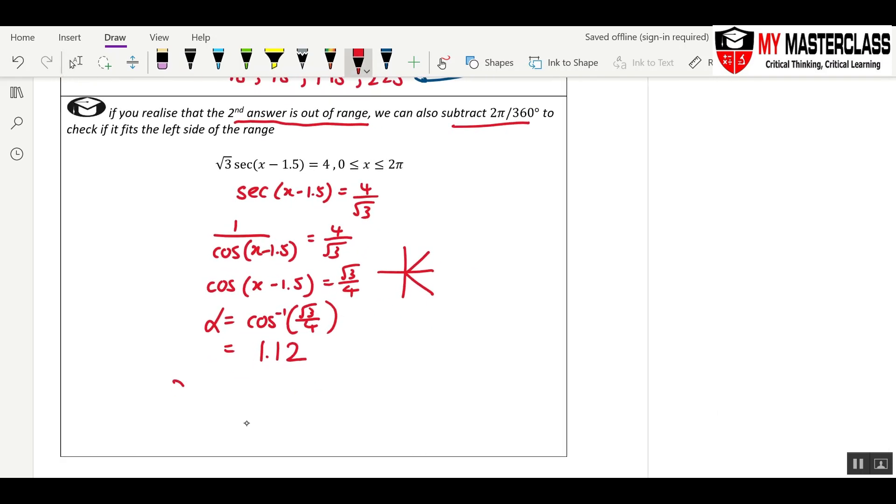Then, because the angle is x - 1.5, remember to write x - 1.5 equals first quadrant 1.12, fourth quadrant 2π - 1.12. Now, the first thing is at the start, we should have edited this range to become -1.5 for both sides, so that your angle is x - 1.5, from -1.5 to 2π - 1.5.